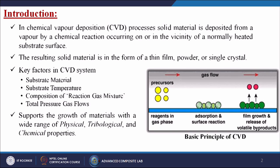From the figure we can understand that there are certain precursors which are the reagents in gas phase, then the gas is flowing, then adsorption and surface reactions take place with the substrate itself. At last, the film is growing onto the substrate material and release of volatile byproducts — some kind of toxic gases or impurities in gas form — come out from the surface, so that we get a virgin material coating on top of the surface.